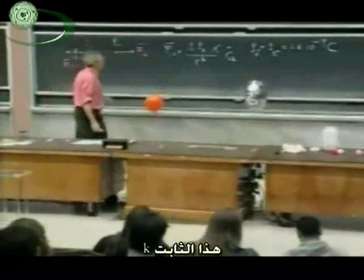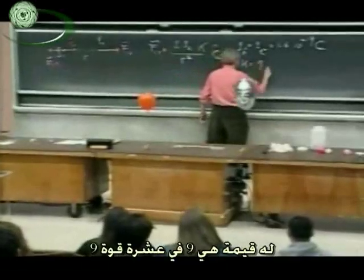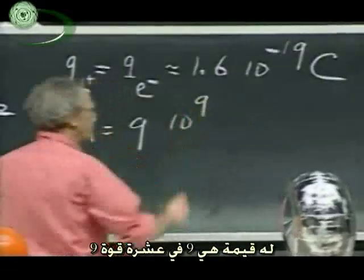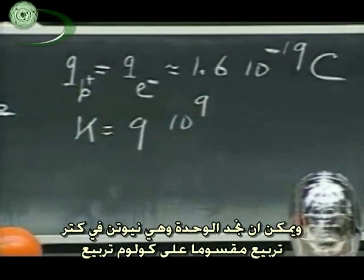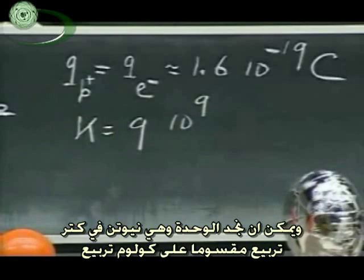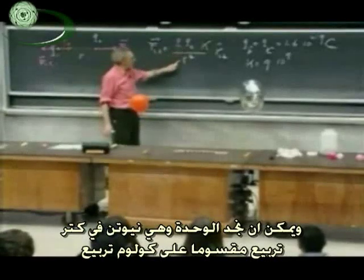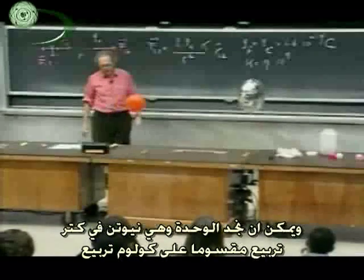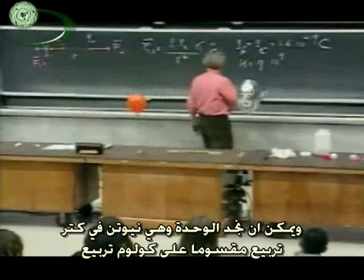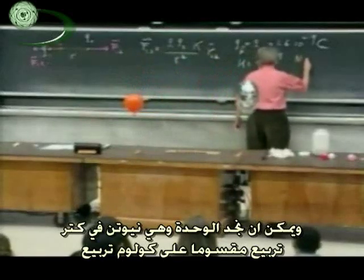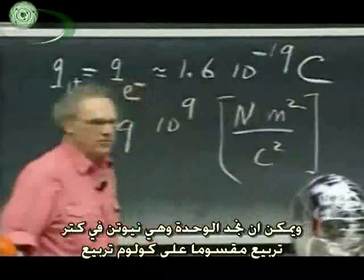This constant K in SI units is nine times ten to the ninth. The unit you can find out because you know that force is in newtons, charge squared is in Coulombs squared, and distance squared is in square meters. So the unit is newtons times square meters divided by square Coulombs. But that's not so important — no one ever thinks of it that way.